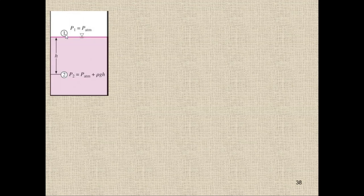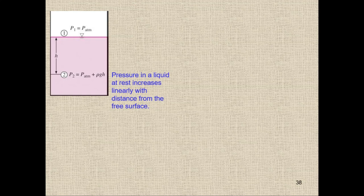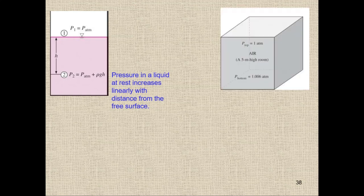At point 1 we have atmospheric pressure, and moving down to point 2: P₂ = P_atm + ρgh. Moving from point 1 to point 2 going down, P₂ = P₁ + ρgh. Remember your reference point and whether you are going up or down. Going down: add pressure; going up: subtract pressure.